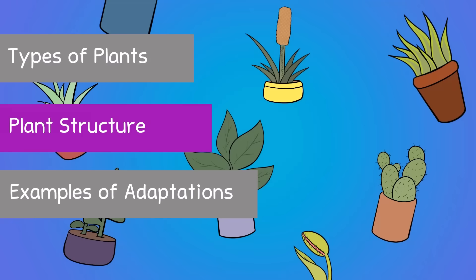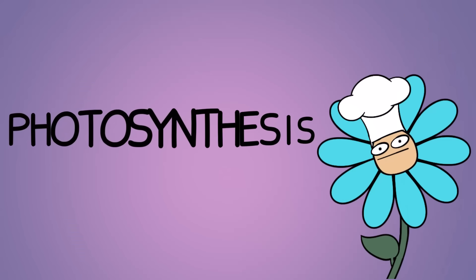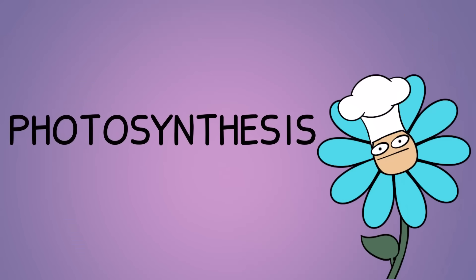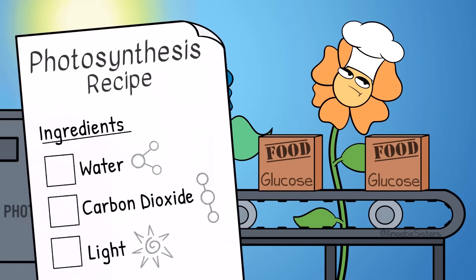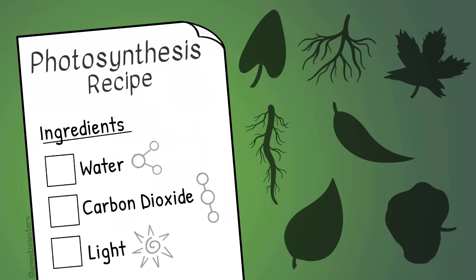Even though every plant species is unique, let's talk about general plant structure. The structure of plants is critical for plants to be able to perform photosynthesis — the ability to make sugar, the plant's own food source, from sunlight. It requires three main ingredients: water, carbon dioxide, and light. To get all three of these things, the plant needs specific structures and adaptations which we're going to walk through.